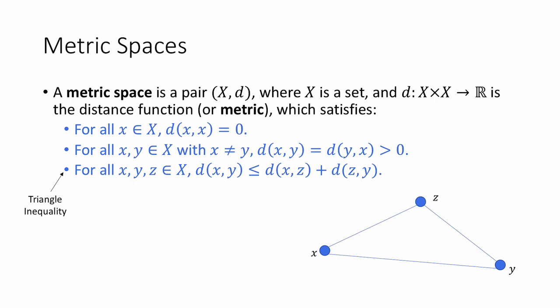Finally, we have the triangle inequality, which says that for any x, y, and z in X, the distance d(x, y) ≤ d(x, z) + d(z, y). This is basically saying that it should be faster to go from x to y than to go from x to z and then from z to y. So any function d that satisfies these three properties is called a metric, and (X, d) together is called a metric space.